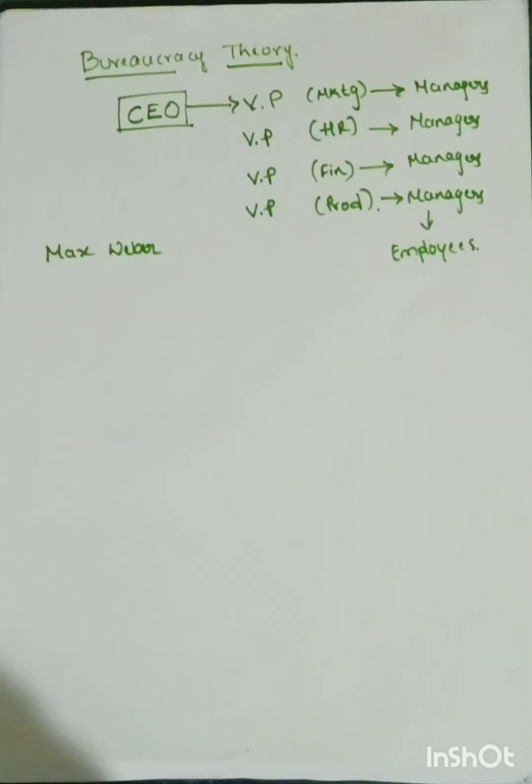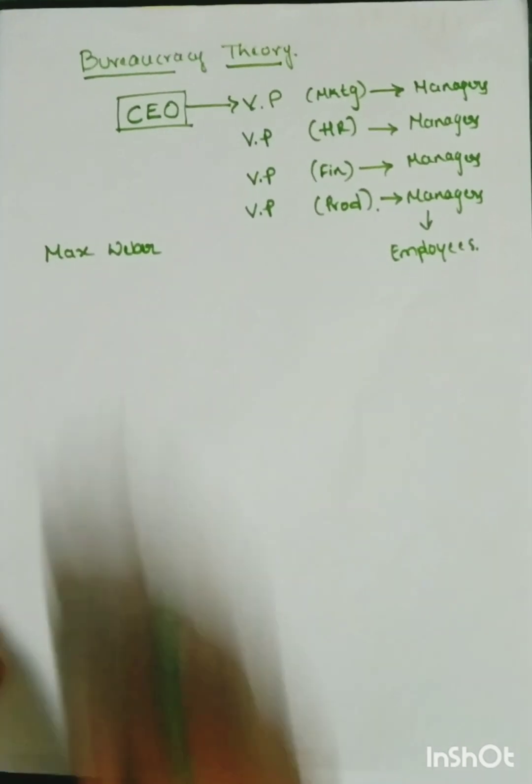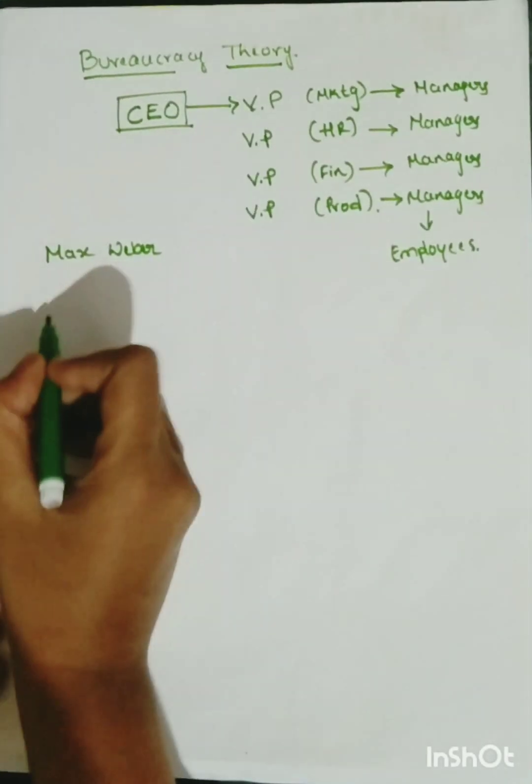What is bureaucracy theory? With the help of this particular example, this theory we can explain mainly by three words.